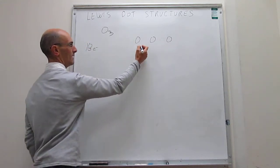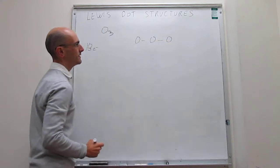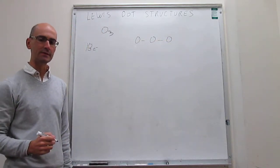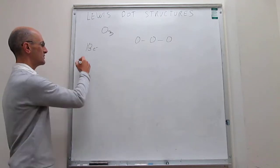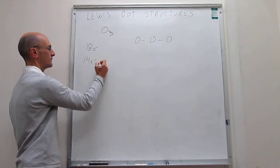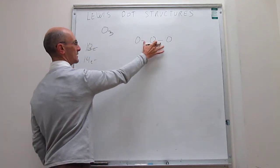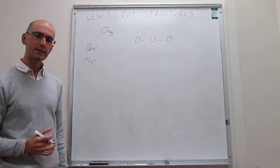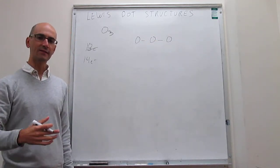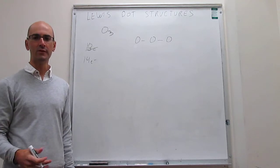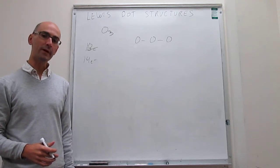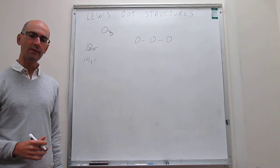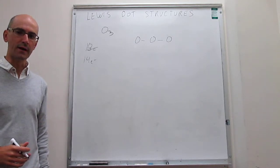We draw bonds between the terminal and the central atom, and there are two electrons per bond. That means I have fourteen valence electrons left over after drawing these single bonds. Then what we do is use these fourteen electrons and place them as lone pairs on the terminal atoms first, and if there's anything left over, we go to the central atom.